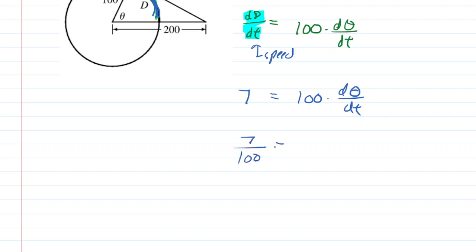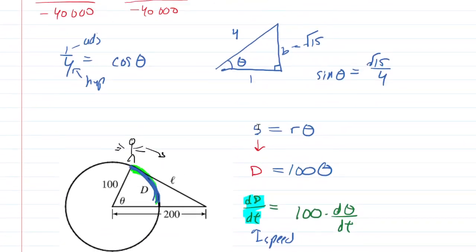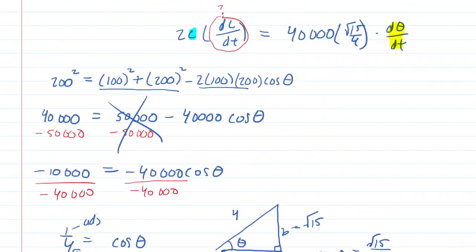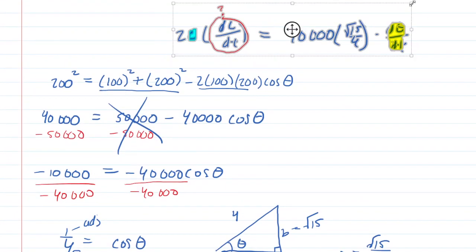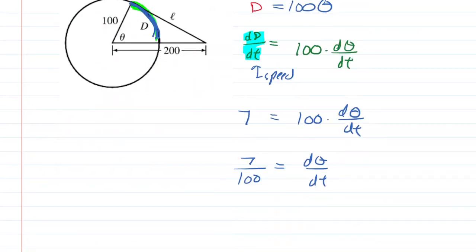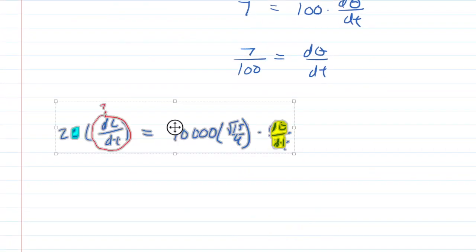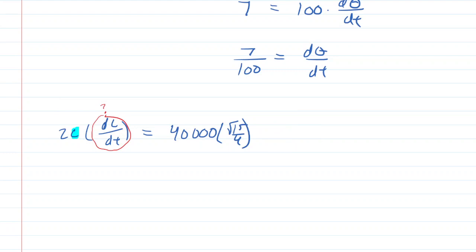You just divide both sides by 100 and that gives you d theta dt. So now we're in business because we go back to our equation that we had been developing earlier, this one right here.